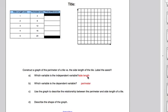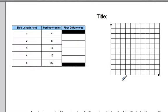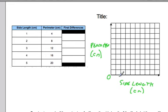So now to graph this, side length is the independent variable, so recall that side length goes on the horizontal axis — that's where the independent variable goes. On the horizontal axis we have side length, and the units are centimeters. On the vertical axis, we have perimeter, and the units are centimeters. We need to go for side length from 0 up to 5, so we'll skip every other one: 1, 2, 3, 4, and 5, because we want to use as much of the grid as possible.